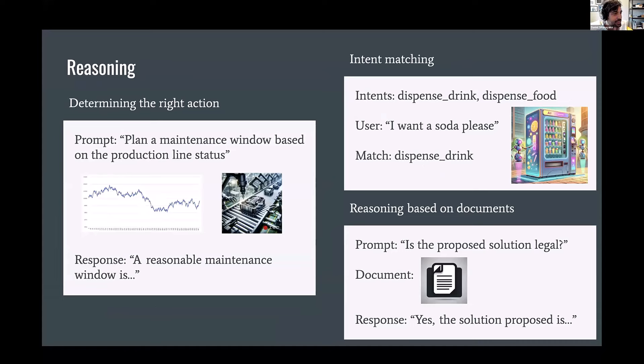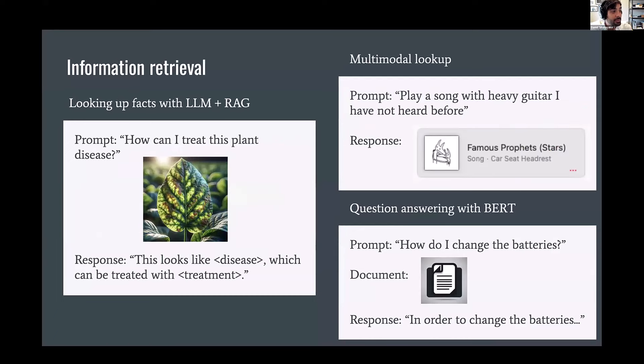Reasoning is another big thing that gets people excited. So a model that can kind of understand the world and maybe make some decisions. So determining what to do based on a sensor reading and some camera footage from a factory, for example, or matching a user's intent to an action based on something they're saying. So they're asking for a soda in many different ways. You can still understand what they're saying. Or reasoning based on documents. So being able to answer questions about a document in some kind of formal setting. Information retrieval is also really exciting. You notice there's some overlap here, but looking up facts using a model. So the model kind of stores the facts, or maybe use RAG to kind of tie in some other data stores, but essentially the model is helping you query some store of data. Doing lookup across different modalities of data. So you can ask for some music and receive a recommendation. Answering questions again with documents.